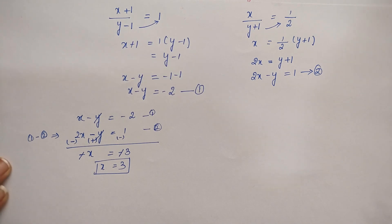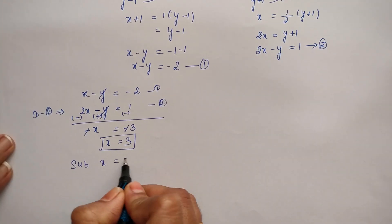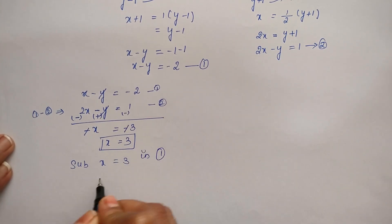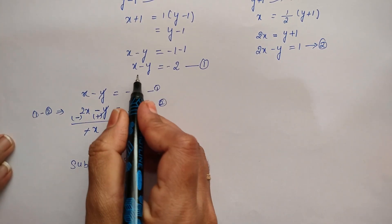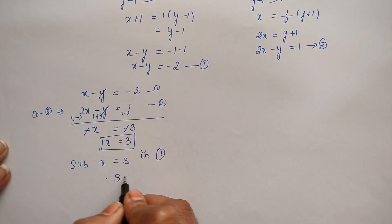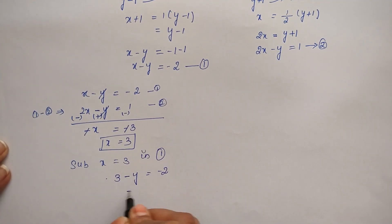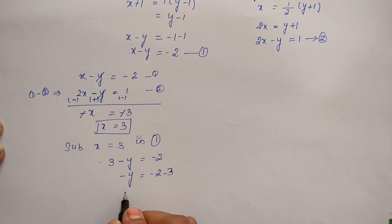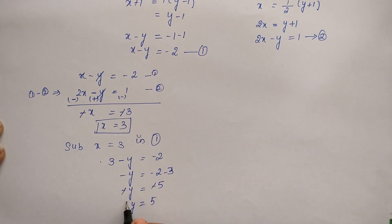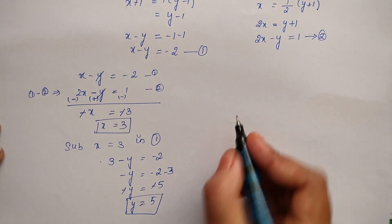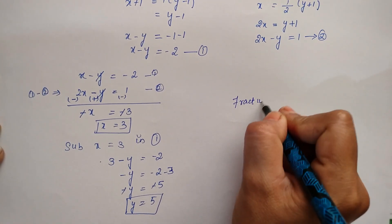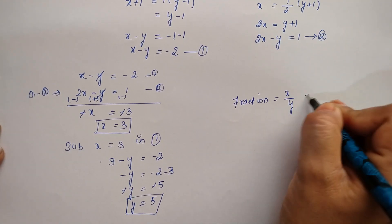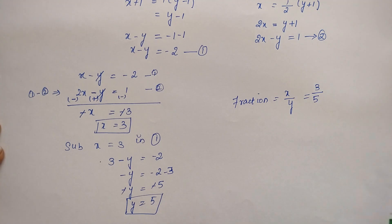Now substitute x equal to 3 in equation 1. So, 3 minus y equal to minus 2. Moving 3 to the right hand side: minus y equal to minus 2 minus 3 equals minus 5, so y equal to 5. Therefore x equal to 3 and y equal to 5, and the fraction is 3 by 5.